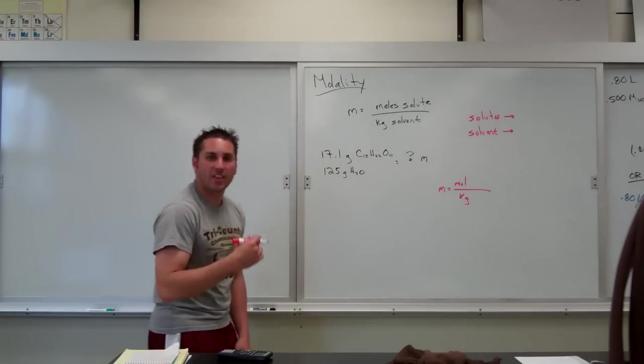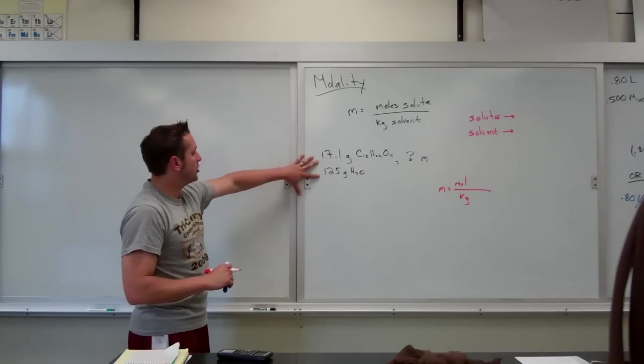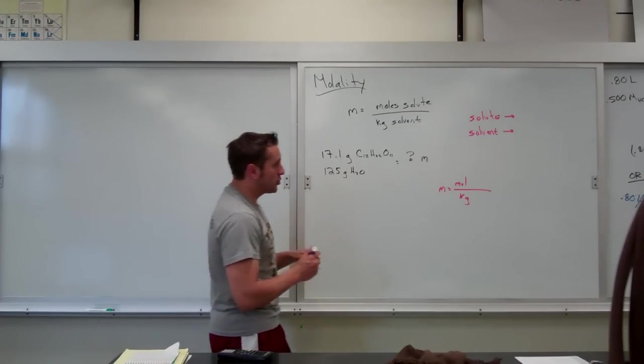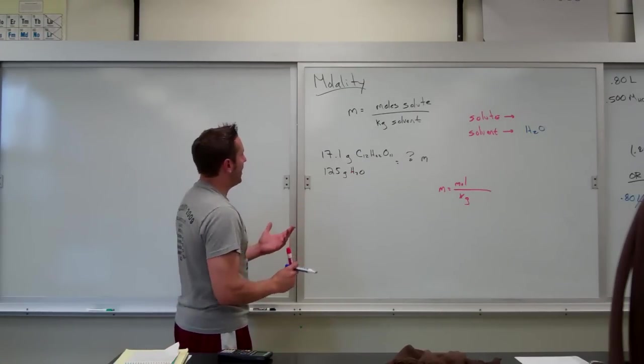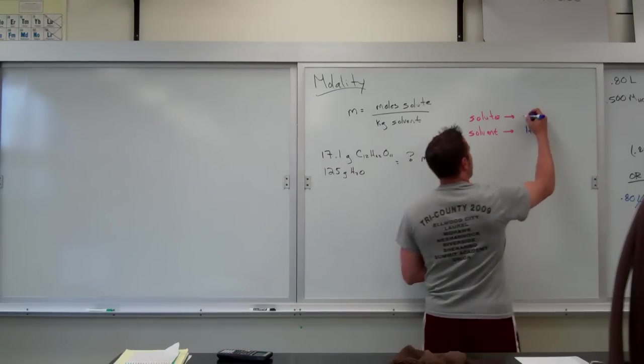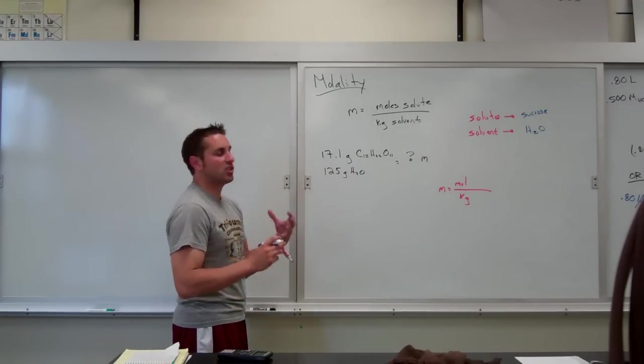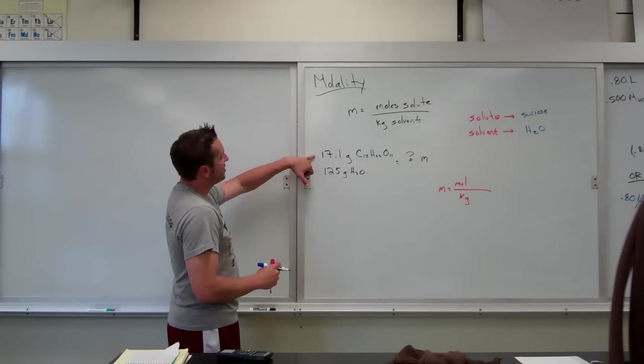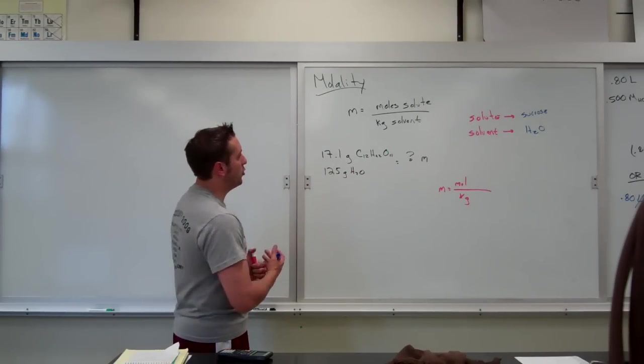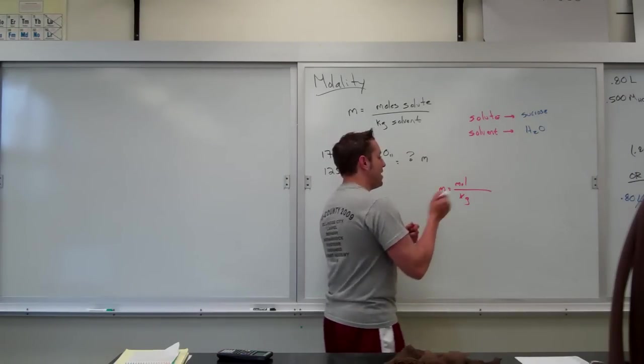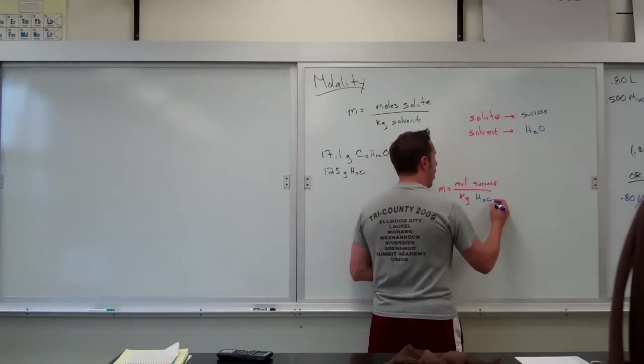The question says, find the molality concentration of the solution. So I'm looking for lowercase m. So I will pivot right to the molality equation, which says little m is equal to moles of solute per kilogram of solvent. This time, I'm going to label who is my solvent and solute so that we can do this. Remember, the solute is the thing that gets dissolved. The solvent is the thing that does the dissolving. So we have sucrose and we have water. Water is known as the universal solvent. So that's one way you would know it's the solvent. Another way that you would know is sugar dissolves in water. That would tell me that the sucrose is the solute.